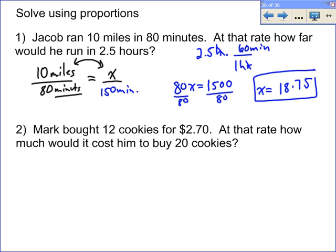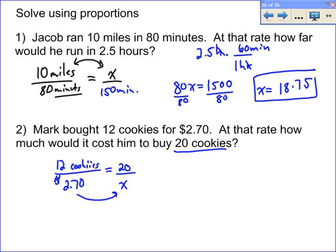The last problem: Mark bought 12 cookies for $2.70, so the rate is 12 cookies per $2.70. You could write a more traditional rate as dollars per cookie, but you could write it this way too — it doesn't matter. The proportion will set it up correctly. The second ratio: we want to find how much 20 cookies cost, so 20 goes on top because it's cookies, and the unknown cost goes on bottom because that's money. These correspond vertically as two separate scenarios.